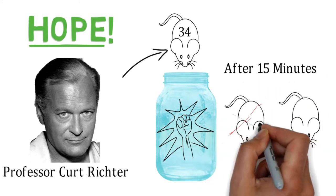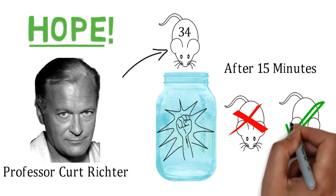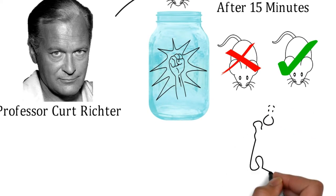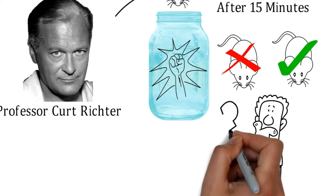Kurt left half of them to die, to make sure that is the maximum they can swim. And the other half he saved, allowing them a few days of rest. Then, he performed the experiment again.